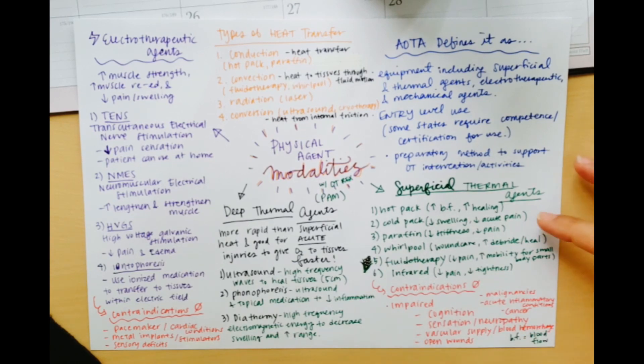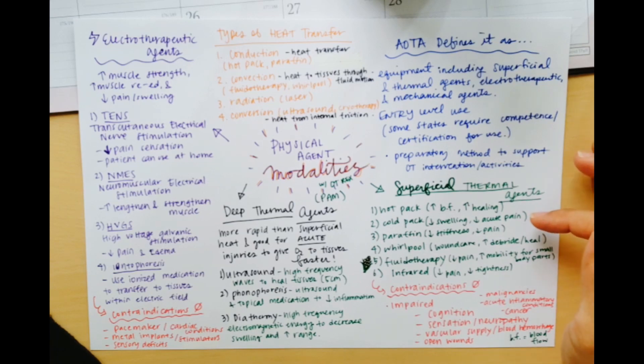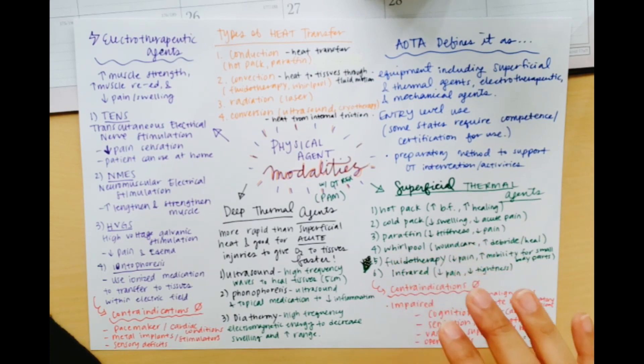I feel like hot packs and cold packs are pretty straightforward. I just indicated certain things that it helps with. So hot packs would increase blood flow. It would increase healing. Cold packs are good with decreasing swelling and decreasing acute pain. Paraffin wax is going to decrease stiffness as well as pain. And when I think paraffin wax, the first thing I think of is arthritis. That is what I use the most for arthritis patients, because it's so good for just really warming up all those tissues in your hands and getting them nice and just like lubricated to move. So that's what I think of for paraffin wax.